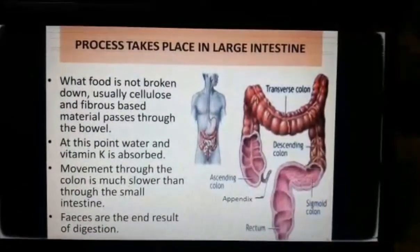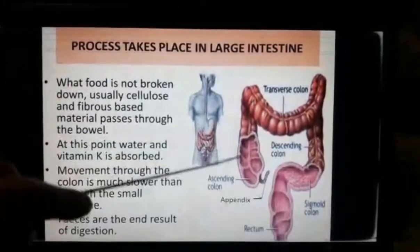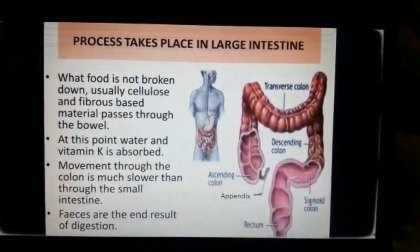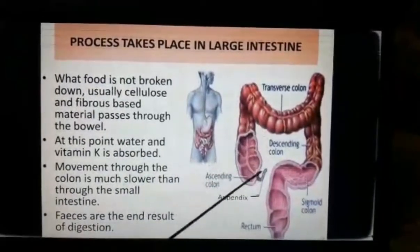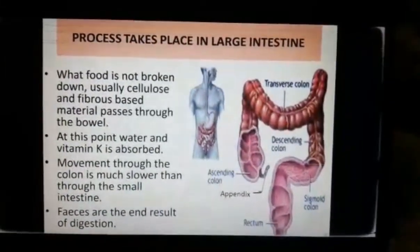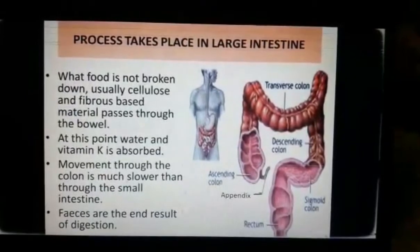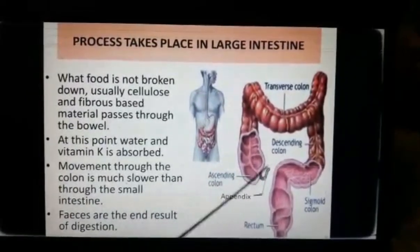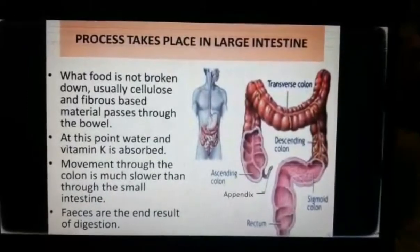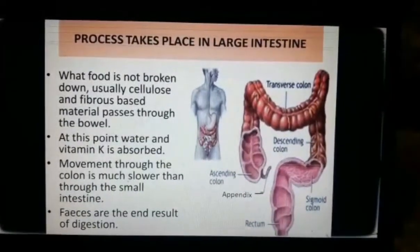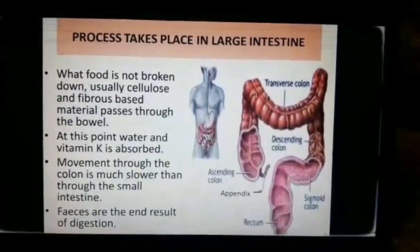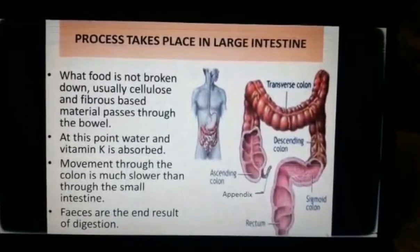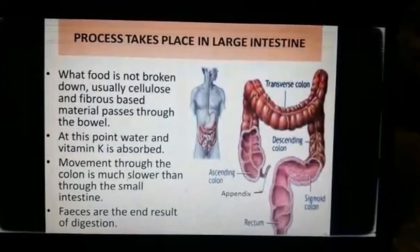The caecum is a small pouch at the junction of the small and large intestine. A narrow cone-shaped tube called the vermiform appendix projects from the caecum. The appendix is a functionless vestigial organ, and when inflamed due to infection, it may cause appendicitis.